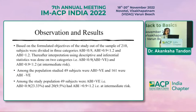Based on the formulated objectives of the study, in a sample size of 210 subjects, I divided them into three categories. Interpretation using descriptive and inferential statistics was performed on two categories: ABI positive and patients with intermediate risk.